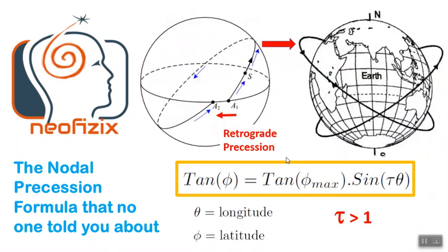This figure shows the case in which the object is revolving in an anti-clockwise manner but the nodal precession is in the reverse direction — that is, in the clockwise fashion. This is a retrograde precession, and we get this when the coefficient of theta is greater than 1 in the formula: tan φ = tan φ_max × sin(τθ). When τ = 1 there will be no nodal precession; when τ > 1 we get retrograde precession as shown here.